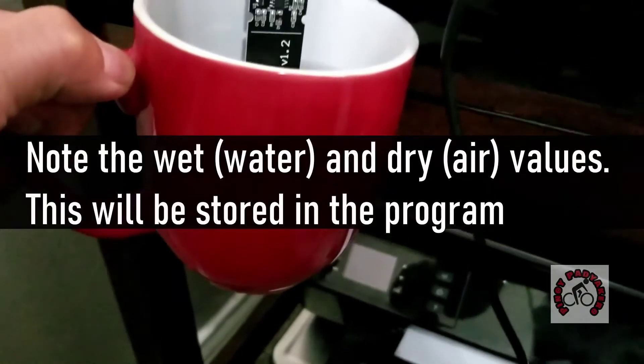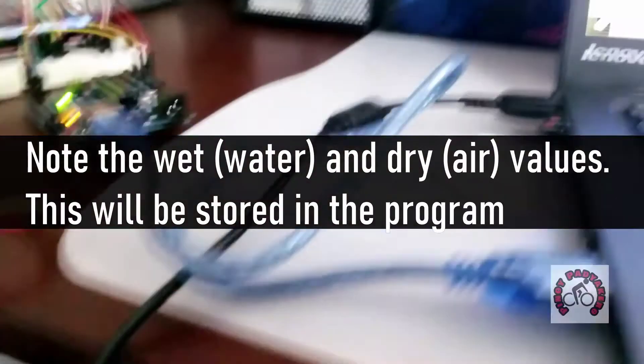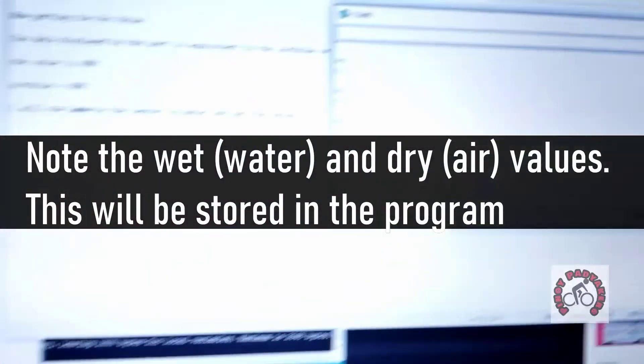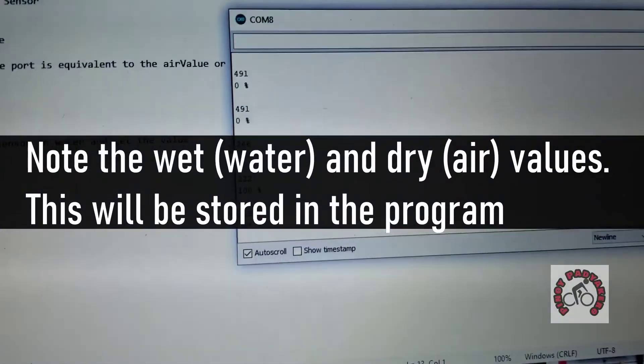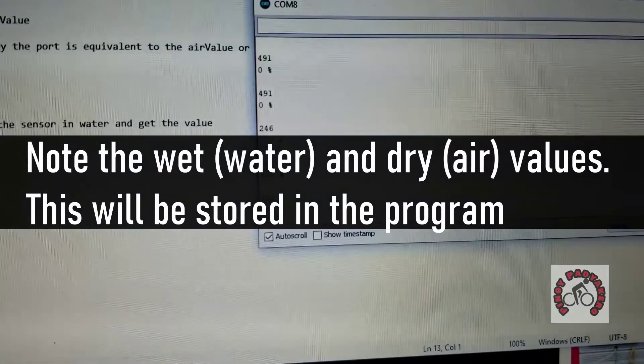The dry value is the value reading of the sensor when it is hanging in the air. Reupload the sketch with the modified wet and dry value.